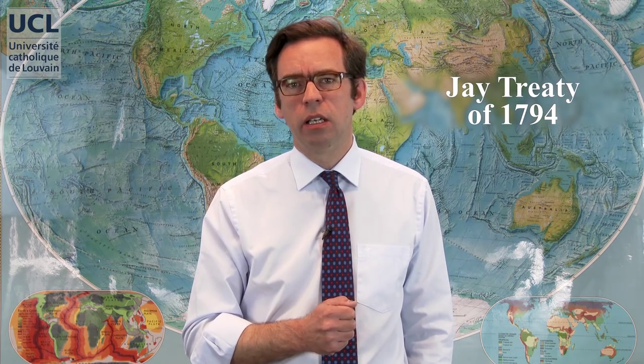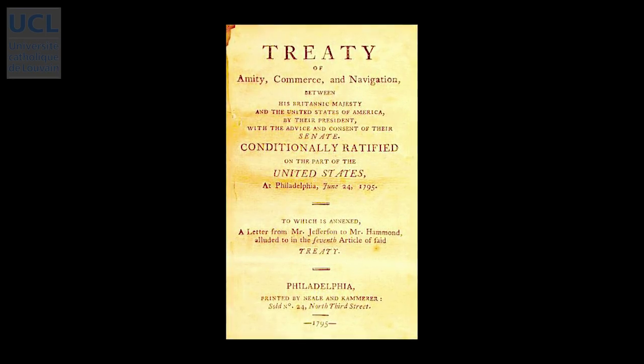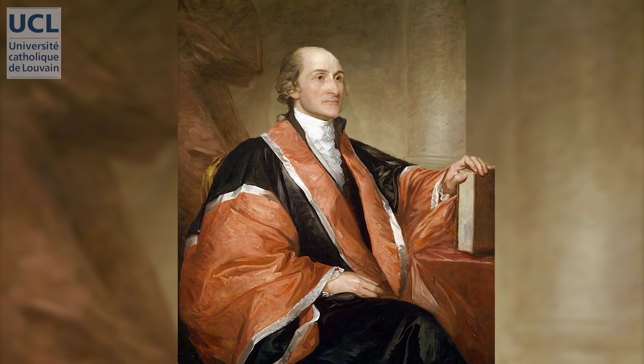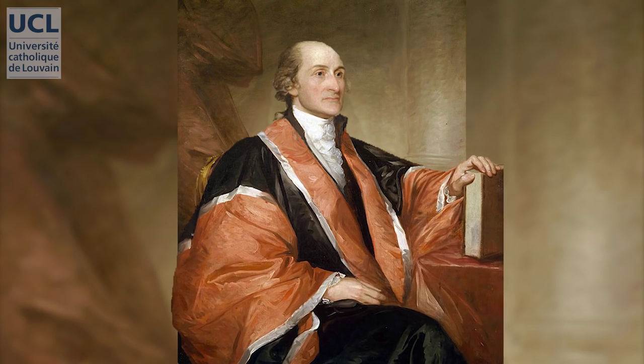Arbitration is an old institution of international law and in its modern form it is usually traced back to the Jay Treaty of 1794, a treaty concluded in London between the young United States of America and Great Britain. The Jay Treaty is named after John Jay, the first Chief Justice of the United States and negotiator of the London Treaty. It is a treaty of amity, commerce and navigation which established mixed commissions of arbitration to solve certain pending disputes that existed between the two parties.